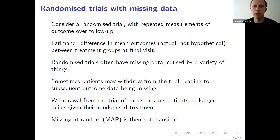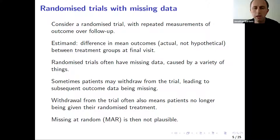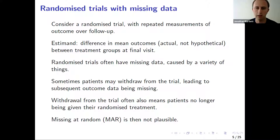Let's introduce reference-based multiple imputation. Consider a randomized trial with repeated measurements of the outcome variable over the follow-up time. The estimand, or treatment effect of interest, is the difference in the mean outcomes between the randomized treatment groups — the actual outcomes, not hypothetical outcomes assuming full compliance — at the final follow-up visit. Randomized trials often have missing data caused by patients withdrawing from the trial, leading to outcome data being missing. That withdrawal often also comes alongside the patients discontinuing their randomized treatment. In those situations, the missing at random assumption is not typically deemed to be plausible, particularly for patients in the active treatment arm.